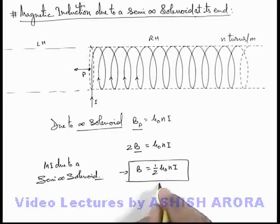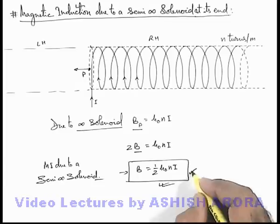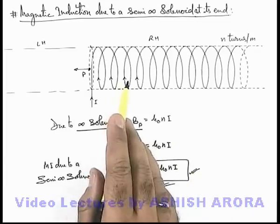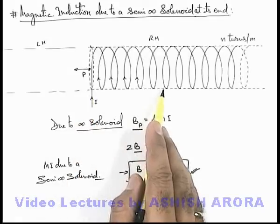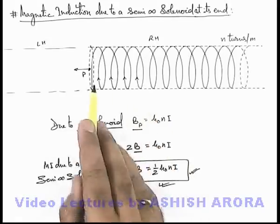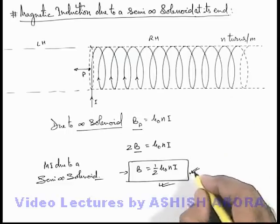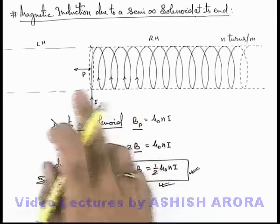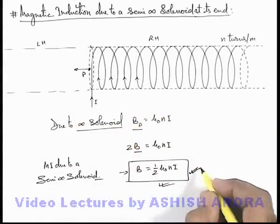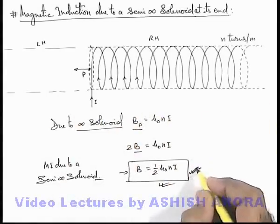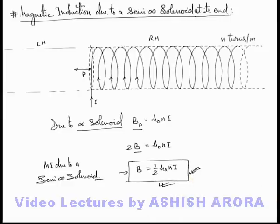At the center, magnetic induction is given by this. Here I am leaving it as an exercise to derive this result by using integral of magnetic induction due to a ring element at a distance x, integrating it within limits from zero to infinity. I request students to verify this result by using the integral of ring elements within limits from zero to infinity. Just solve it and verify whether you are getting the same result or not.